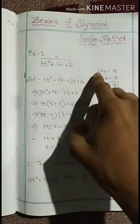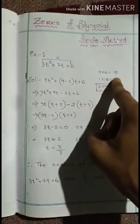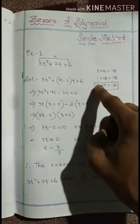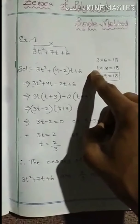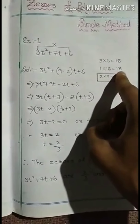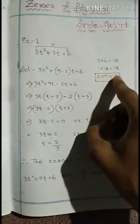When you multiply these numbers, the factor pairs will be: 1 into 18 is equal to 18, and 2 into 9 is equal to 18.